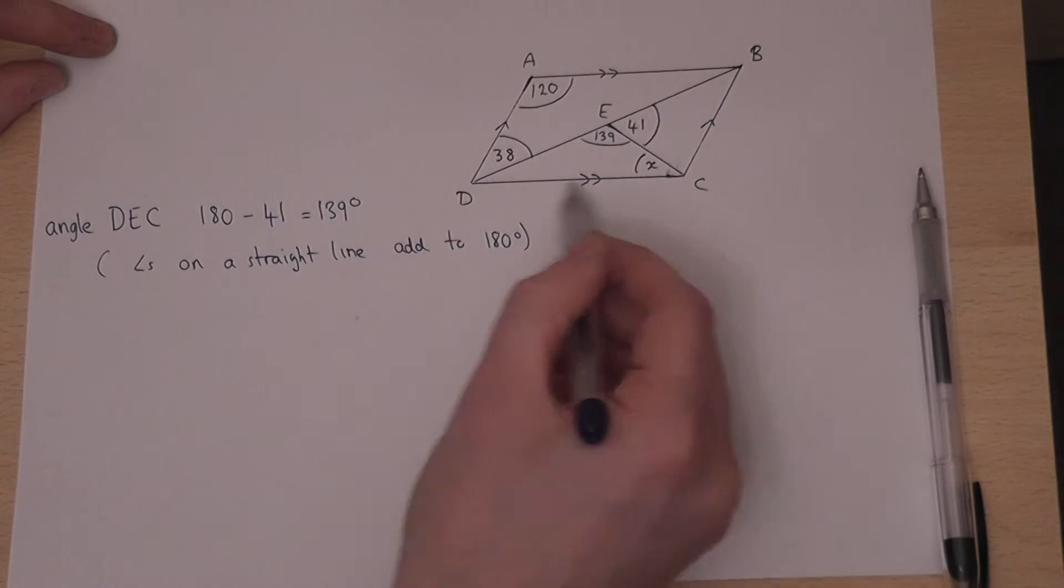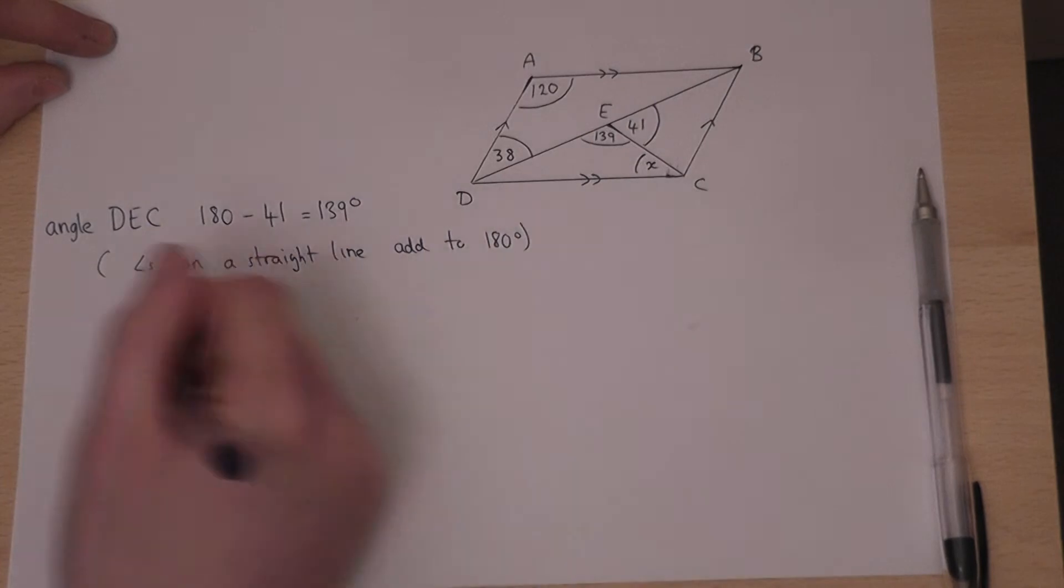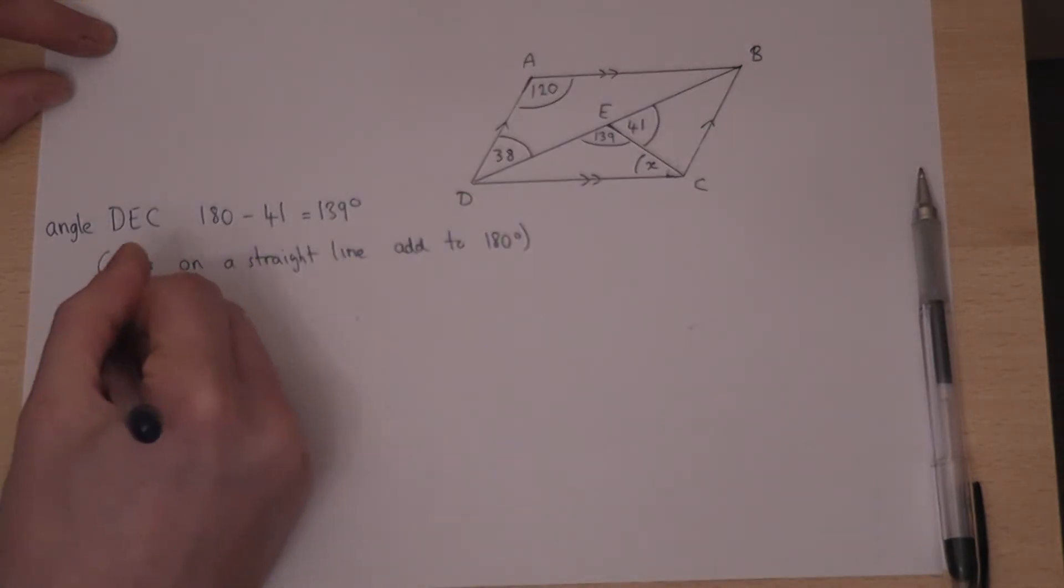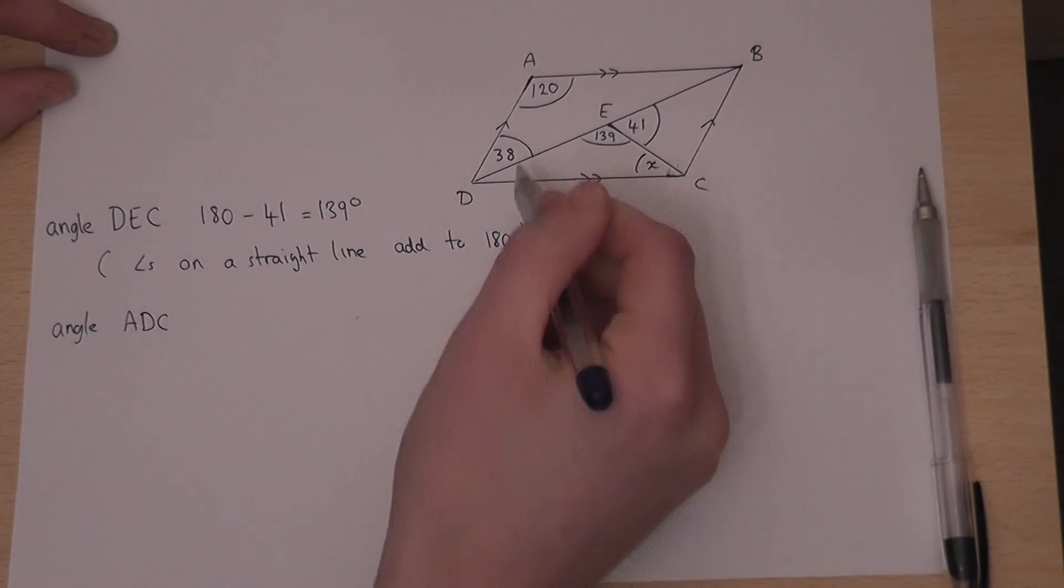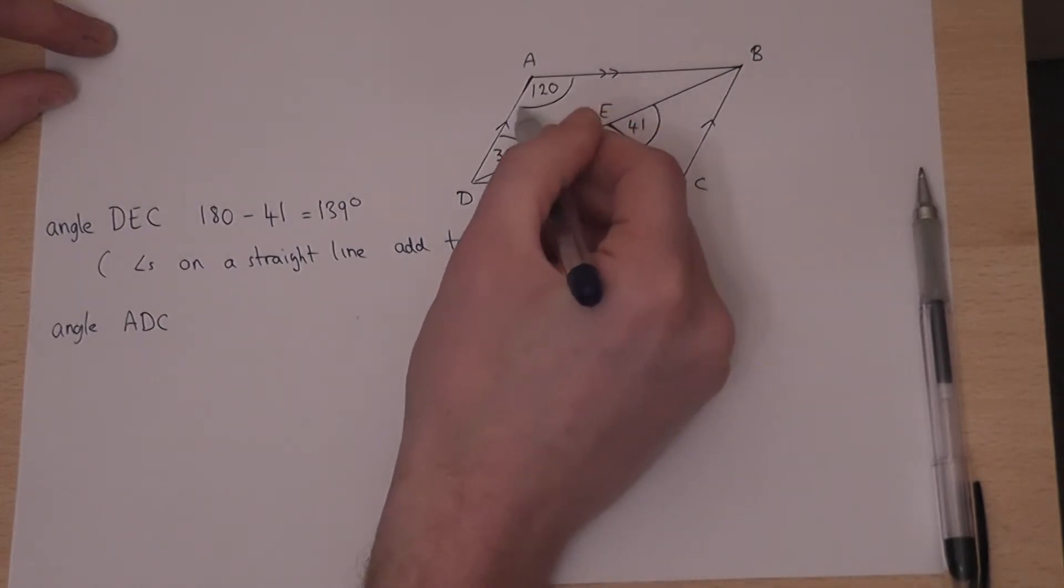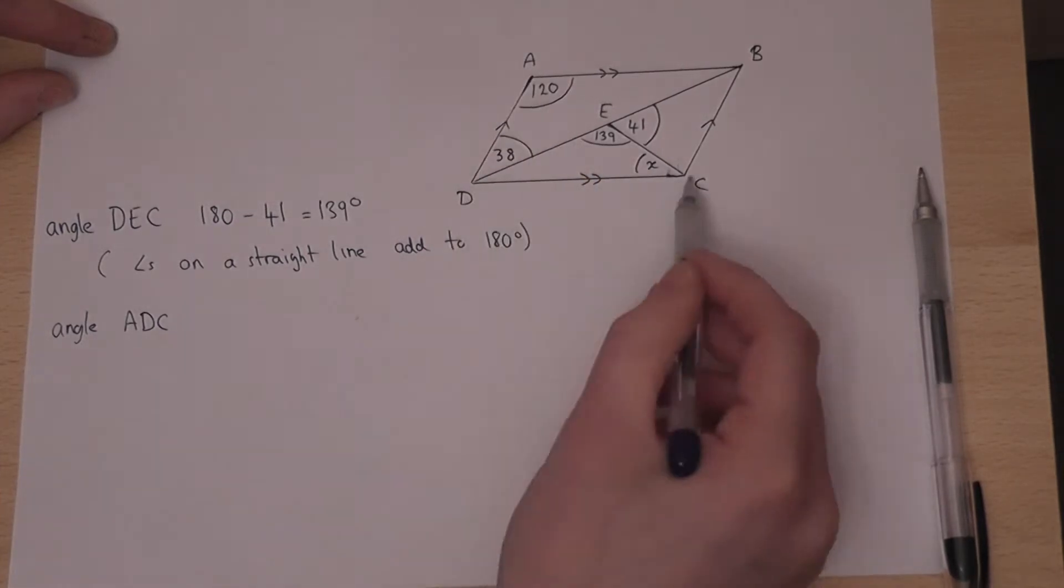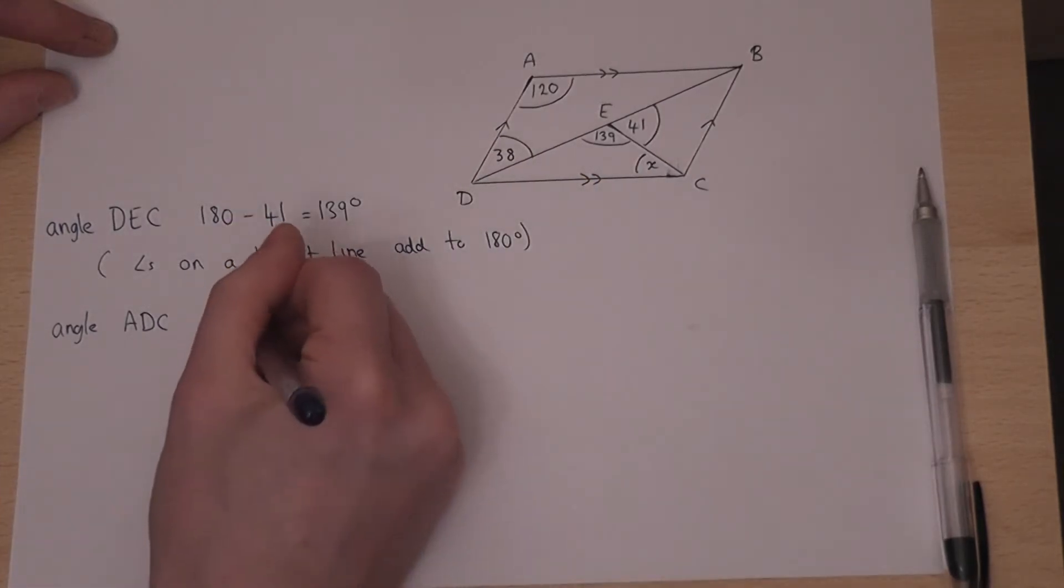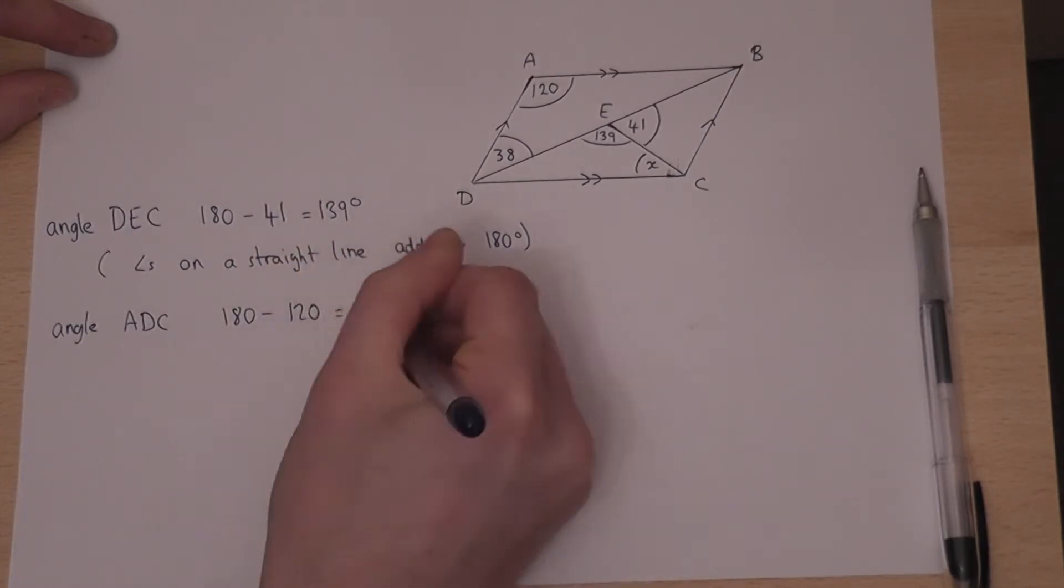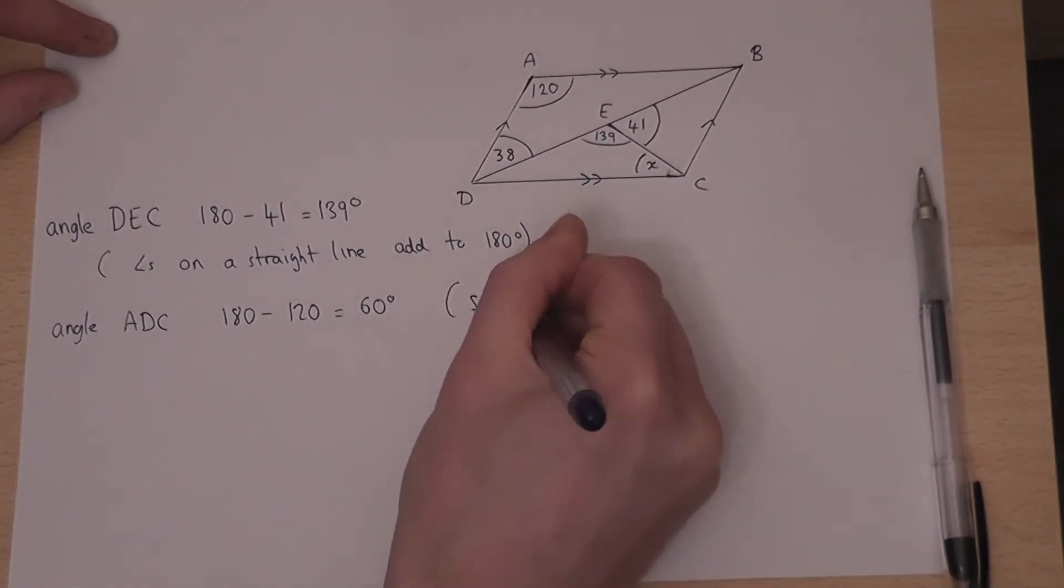If I look at this angle here, this angle here is A to D to C. This here forms almost like a C shape. And this angle here, plus that angle there, add to 180. So angle ADC must be 180 minus 120, which is 60 degrees. There's a name for that, and they're called supplementary angles.